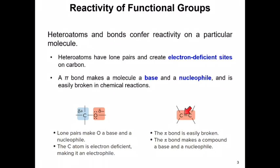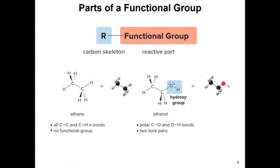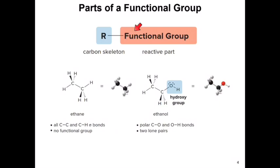A typical organic molecule has two parts. The first is the R group, which is the carbon skeleton — it contains only carbons and hydrogens with carbon-to-carbon single bonds and carbon-to-hydrogen single bonds. Connected to this carbon skeleton is the functional group, which is the reactive part of the molecule. Functional groups include heteroatoms like halogens, oxygen, sulfur, or phosphorus, as well as double bonds or triple bonds.